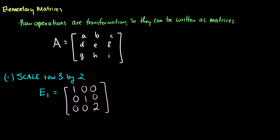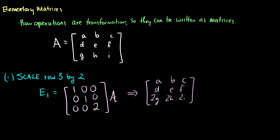And if we do some matrix multiplication here, our end result is going to produce A, B, C, D, E, F, and then we get 2G, 2H, and 2I. So that's when we multiply this by A. So that is the elementary matrix that scales the third row by 2.